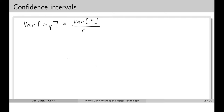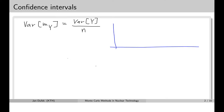Let's take the example problem from the previous lesson: the calculation of the distance that neutrons coming out of a fission reaction fly to the first collision. We know the probability density function for sampling this distance — it is an exponential function. During the simulation we will use this probability density function to sample the distance to the first collision.